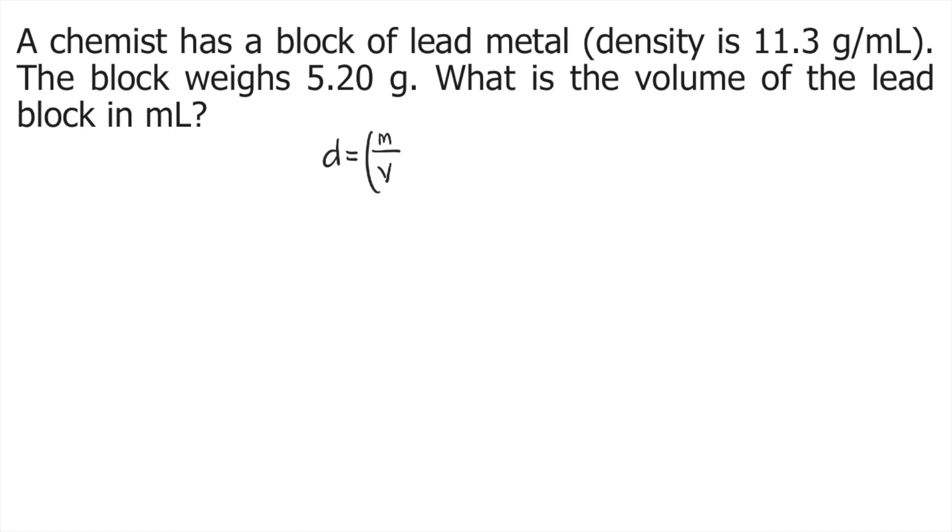What you need to do is multiply both sides of the equation by v. What happens is that v cancels on the right side, so what's left on the right side is m, and on the left side you have v times d.